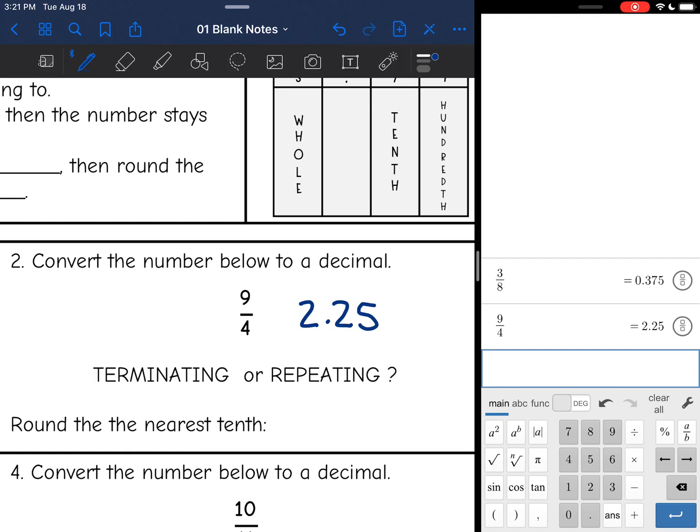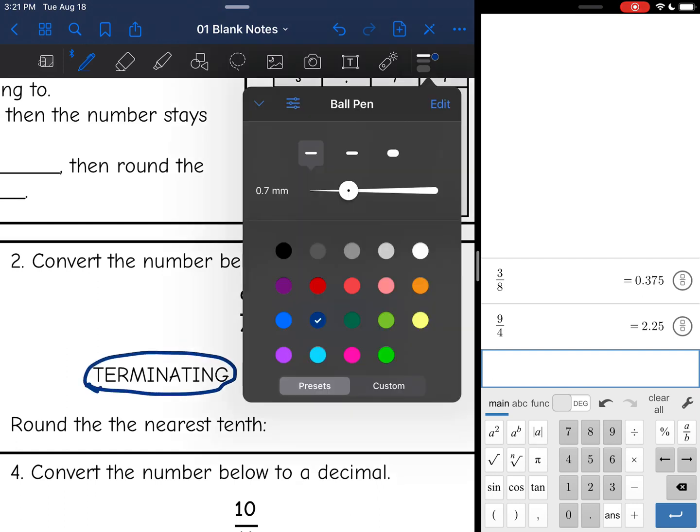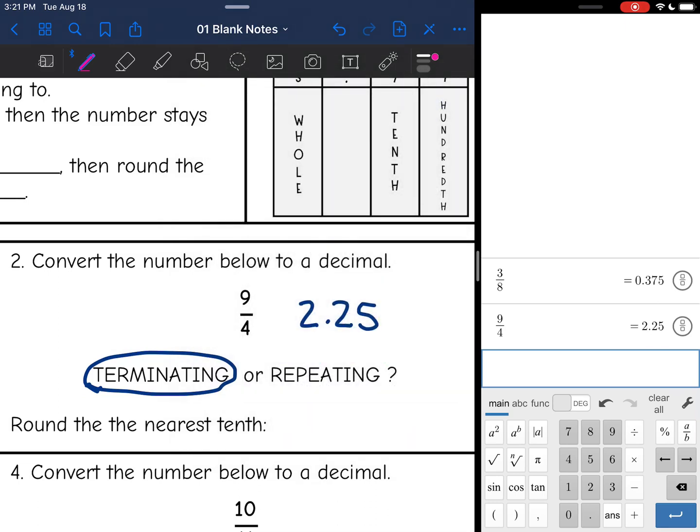That obviously stops after the 5, so it's going to be terminating. And then I need to round it to the nearest tenth place, which is this 2 right here. Since there's a 5 after the 2, I need to round that 2 up, so it's going to be 2.3. So 9 fourths rounded to the nearest tenths is 2.3.